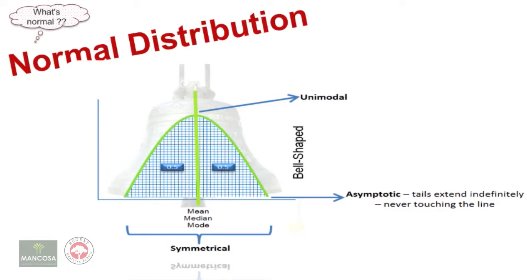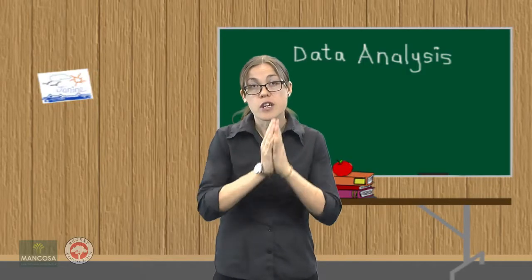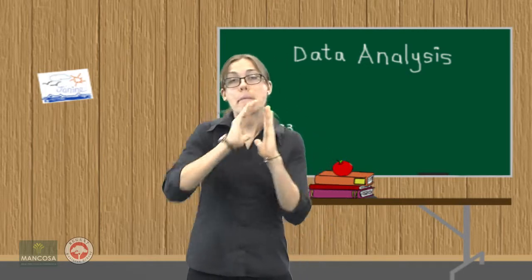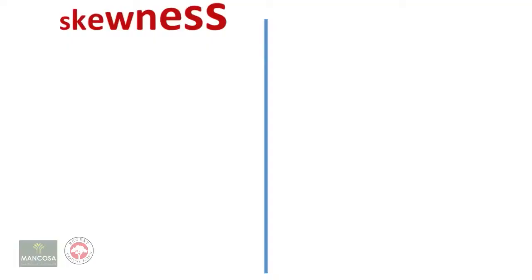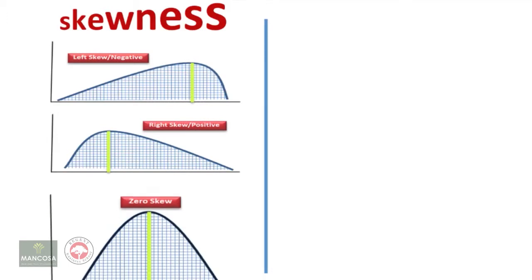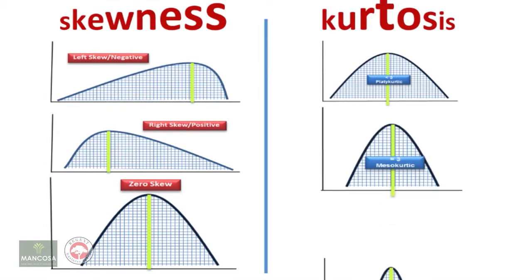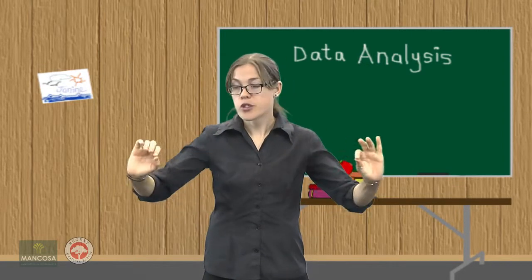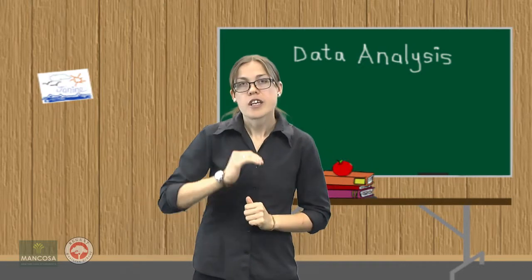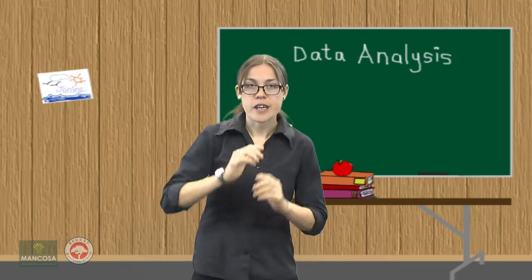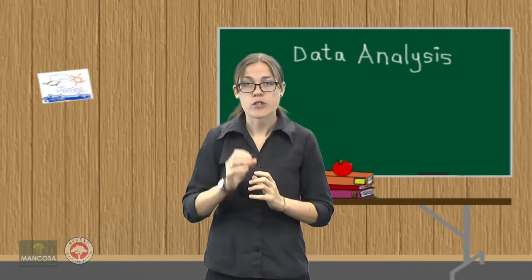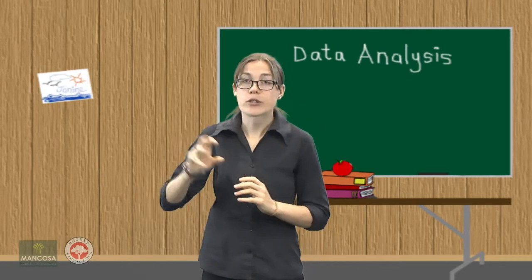The shape of the distribution is important and can be defined primarily by looking at two things, the skewness and the kurtosis. Skewness indicates where the bulk of your distribution of counts lie, whereas the kurtosis indicates the degree to which the scores cluster at the ends of the distribution. The ends of your distribution are known as your tails. Your kurtosis also indicates how pointy the distribution is. A normal distribution will have values of zero for both the skewness and kurtosis.